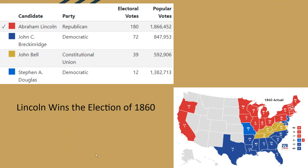Lincoln wins the election of 1860. Notably, he didn't even compete in the South — his name wasn't on some Southern ballots — and he focused entirely on the North, where most of the population was. Lincoln wins 180 electoral votes. John Breckenridge comes in second with 72, winning almost all the Southern states. John Bell gets 39 electoral votes. Stephen Douglas gets only 12 electoral votes, but he came in second in the popular vote — a perfect example of where the Electoral College and the popular vote don't match up.